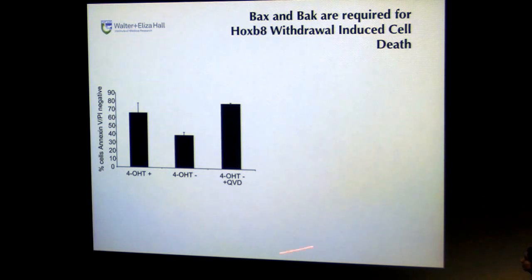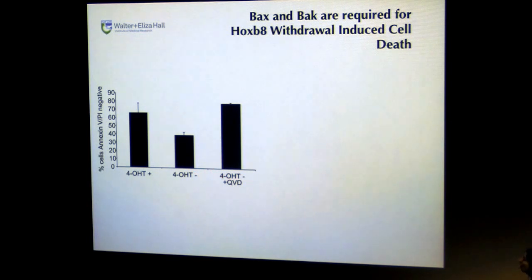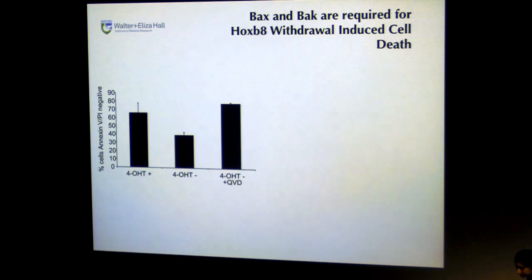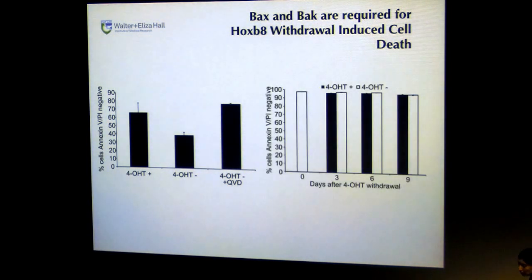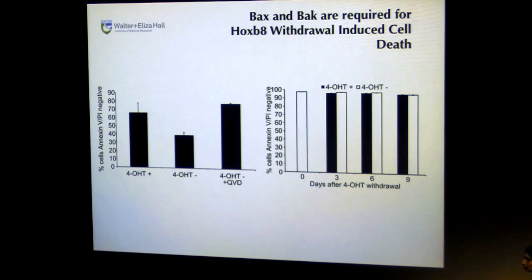We first tested whether cell death was caspase-dependent by adding caspase inhibitor QVD to cells cultured in the absence of 4-HT. At the six-day time point after 4-HT withdrawal, addition of QVD prevented cell death, indicating the cell death after HoxB8 withdrawal was caspase-dependent. To determine whether BAX and BAK were required, we immortalised fetal liver cells from BAX-BAK double knockout mice and withdrew 4-HT. Over a nine-day period of 4-HT withdrawal, we saw no cell death occurring in these cells, showing that a BAX-BAK-dependent mechanism was inducing cell death after HoxB8 withdrawal.